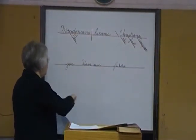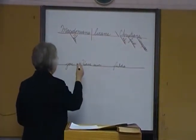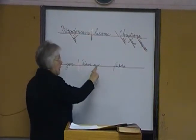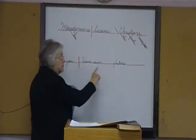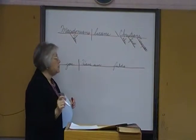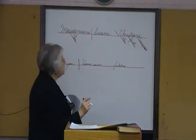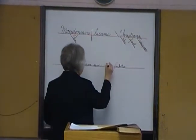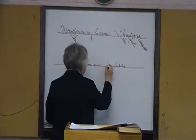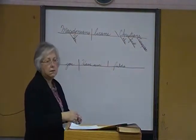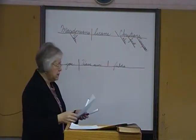Let's divide it. Subject, verb, complement. This is an action verb — the main verb is an action verb — therefore we have a direct object, because 'fields' answers 'what?' after 'seen.' Therefore we have a vertical line that stops at the baseline. And now we have modifiers.